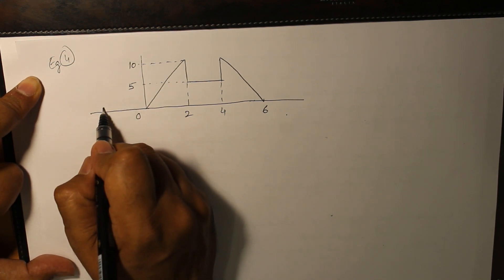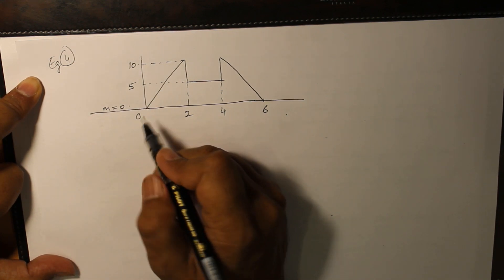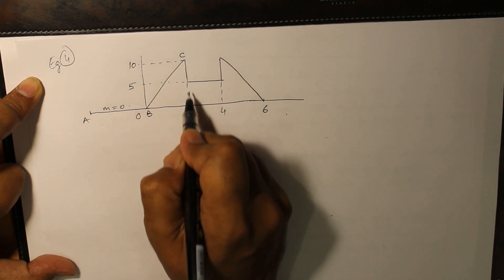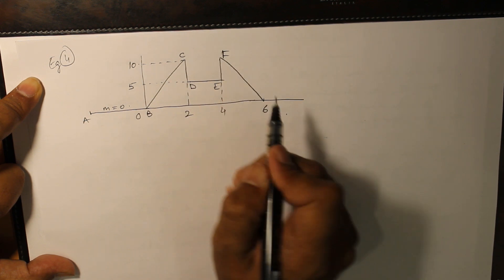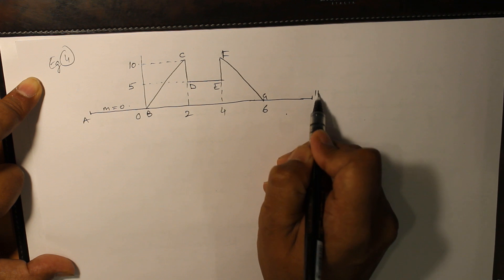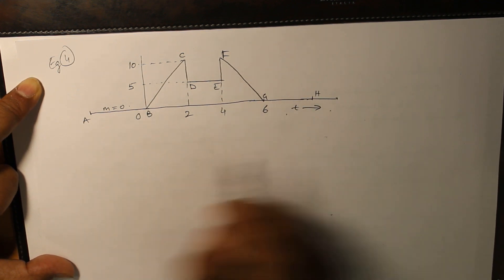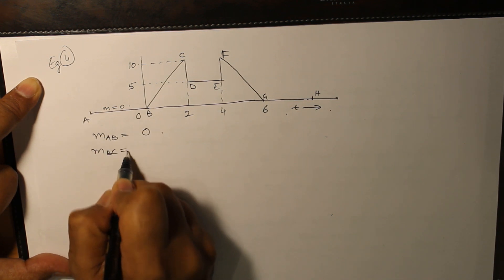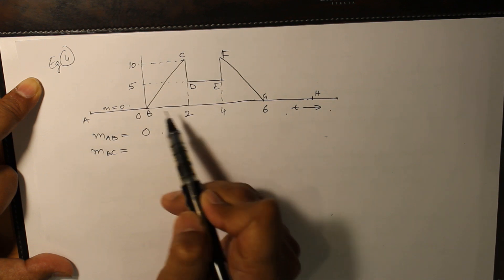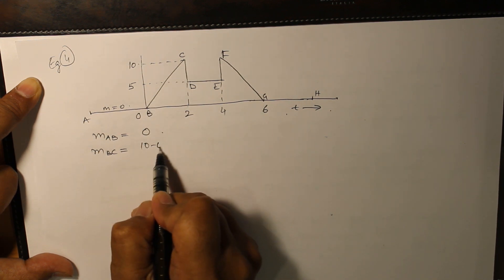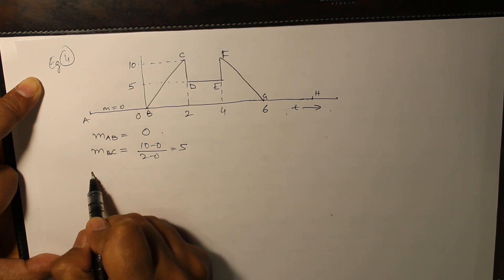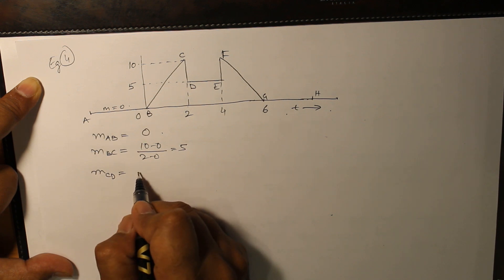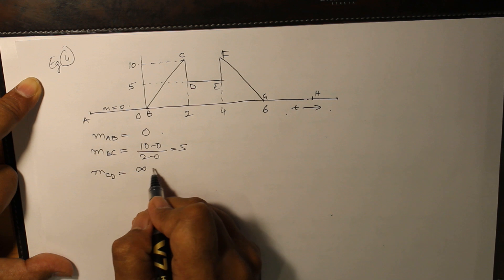We will consider this problem and on the diagram itself we'll write down the slopes, labeling segments as a, b, c, d, e, f, g, and h. Let us find out the slopes: m of ab is equal to 0, m of bc is equal to 10 minus 0 divided by 2 minus 0, and m of cd we are not required to find because it's infinity — we don't have to, as this is a certain change in magnitude.